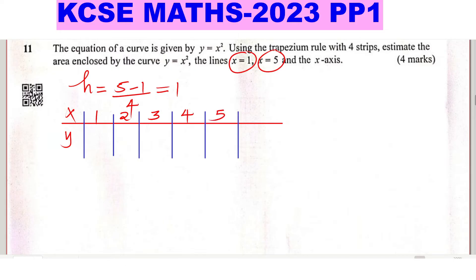When x is 1, what is y? We're using this function y equals x squared. So to get the y, we simply square the x. When x is 1, 1 squared is 1. Then 2 squared is 4, 3 squared is 9, 4 squared is 16, 5 squared is 25.